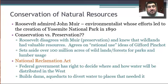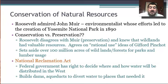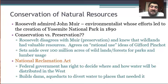Roosevelt and the federal government also passed the National Reclamation Act, because water is such a scarce resource out west. Different people were fighting over it — miners would divert rivers, farmers would divert rivers — leading to bitter conflicts over who was in charge of the water. So the federal government steps in and builds dams and aqueducts to divert water to places that need it out west.